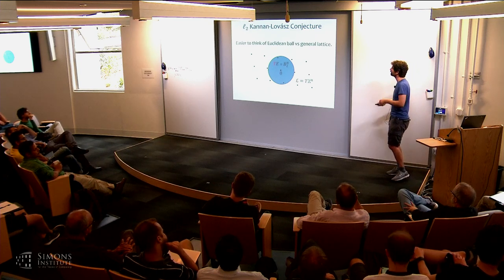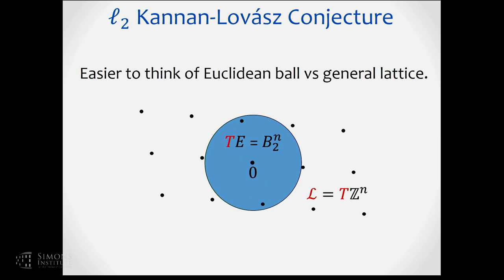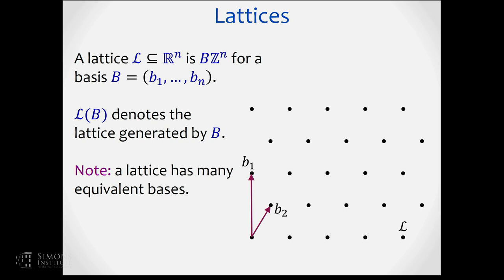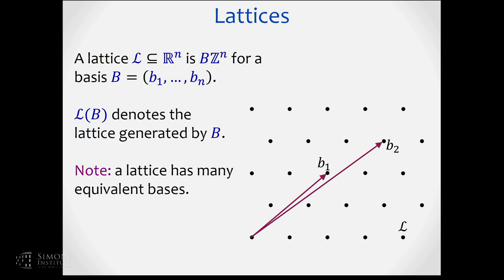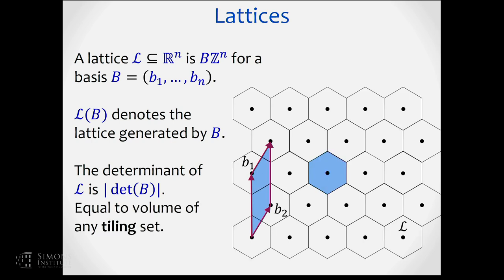Lattices are integer linear combinations of any basis of R^n. There are many different ways of specifying the same lattice. The quantity of crucial importance is the determinant, which is the volume of the fundamental parallelepiped for any basis. More importantly, it equals the volume of any region that tiles space with respect to the lattice — so it is a useful invariant.